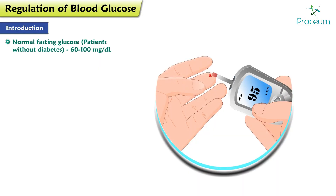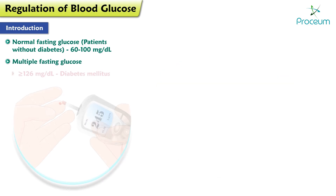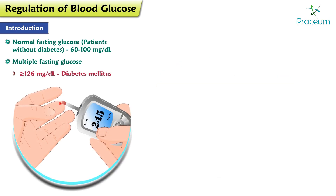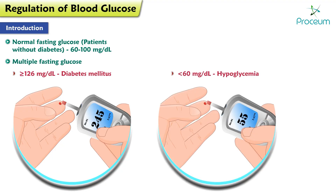For patients without diabetes, normal fasting glucose is between 60 and 100 milligrams per deciliter. Multiple fasting glucose levels that are greater than or equal to 126 milligrams per deciliter indicate diabetes mellitus, while levels that are less than 60 milligrams per deciliter indicate hypoglycemia.